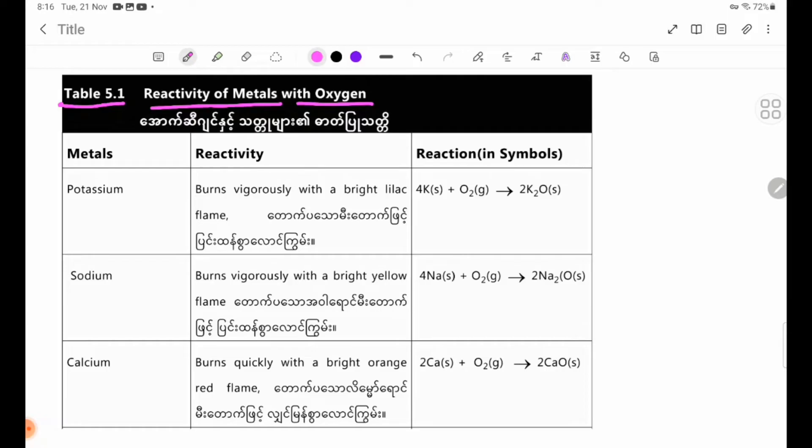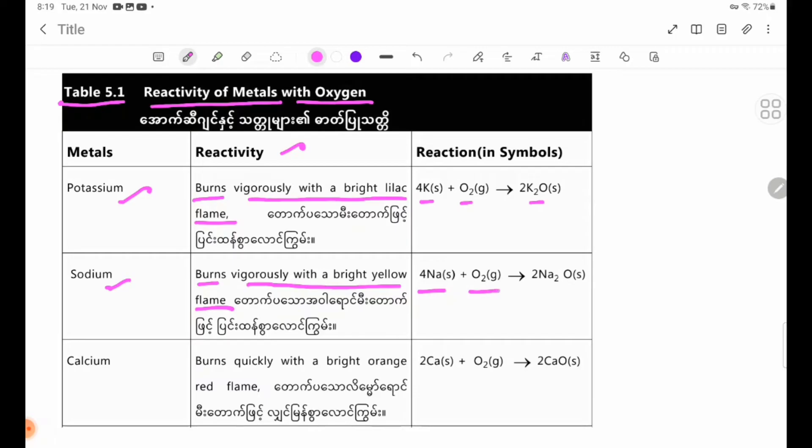Potassium has very high reactivity with oxygen, producing potassium oxide (K2O). The reaction is: 4K(s) + O2(g) → 2K2O(s). Sodium burns vigorously with a bright yellow flame. The reaction is: 4Na(s) + O2(g) → 2Na2O(s).